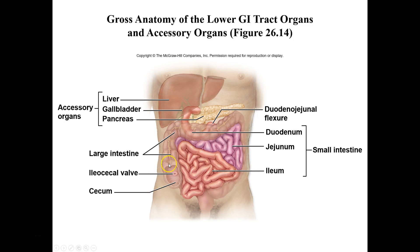The large intestine starts at this region called the cecum. Materials from the ileum move into the cecum through the ileocecal valve, which is typically closed but opens when there is a movement of materials into the stomach — that's typically what stimulates this ileocecal reflex.